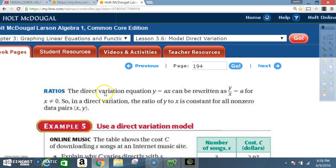Ratios. The direct variation equation, Y equals A times X, can be rewritten as Y divided by X equals A. Where X cannot be 0. So, in a direct variation, the ratio of Y to X is constant for all non-zero data pairs, X and Y.